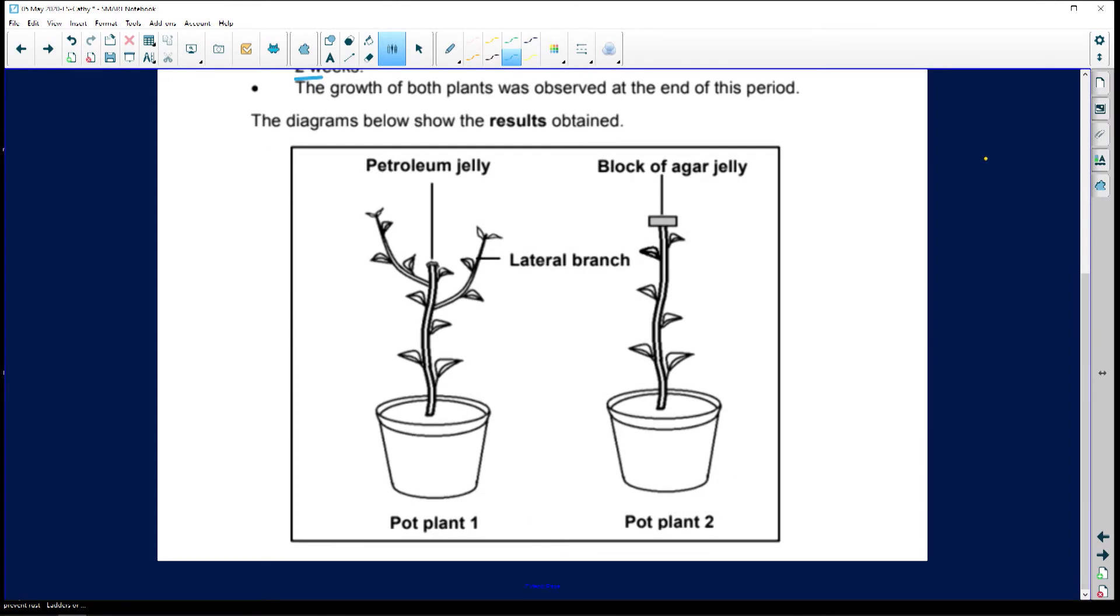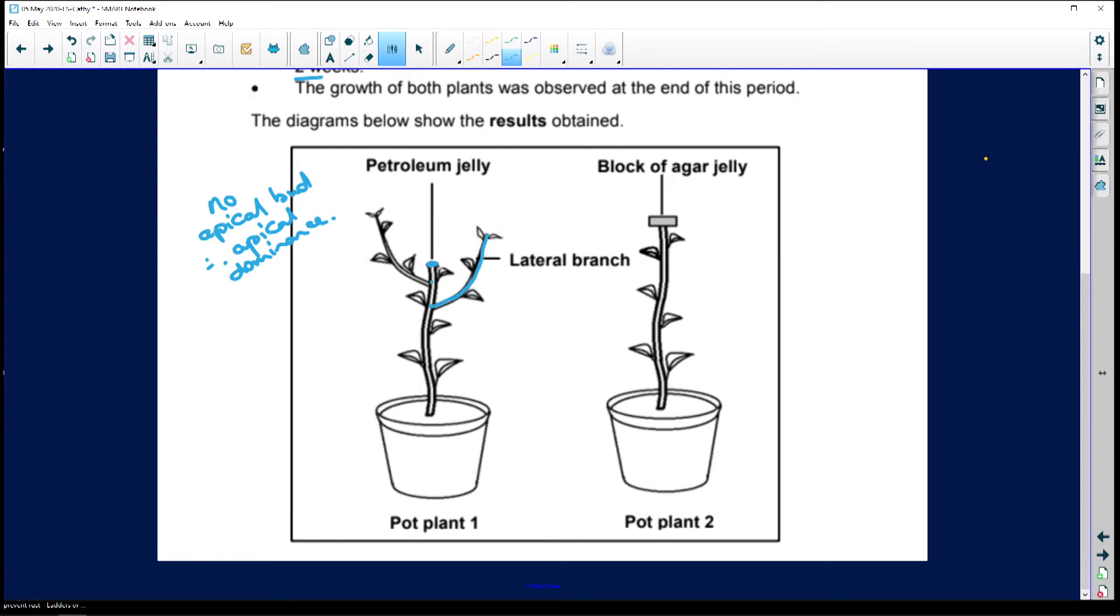We've got pot plant one, there's your petroleum jelly over the top. And because it had no apical bud, therefore there was no apical dominance. Apical dominance is the fact that auxins at the tip of the growing tip, the apical bud, causes a plant to grow upwards towards the light. When that apical bud is cut off, the plant can't grow up because there are no hormones telling it to.